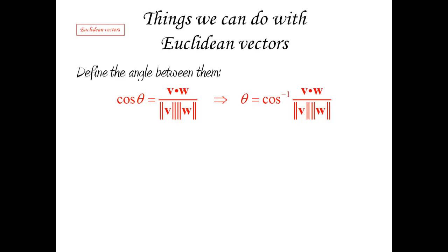And therefore, we can define theta as the inverse cosine of that formula. So, we can define the angle between two vectors, even though we're talking about vectors which don't have a geometry. There is no real angle, but we can still talk about angles, and it will be a useful concept.